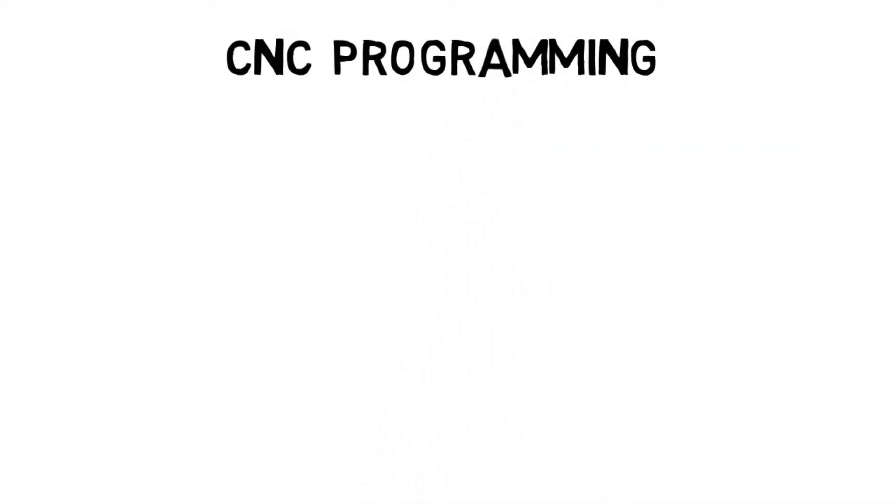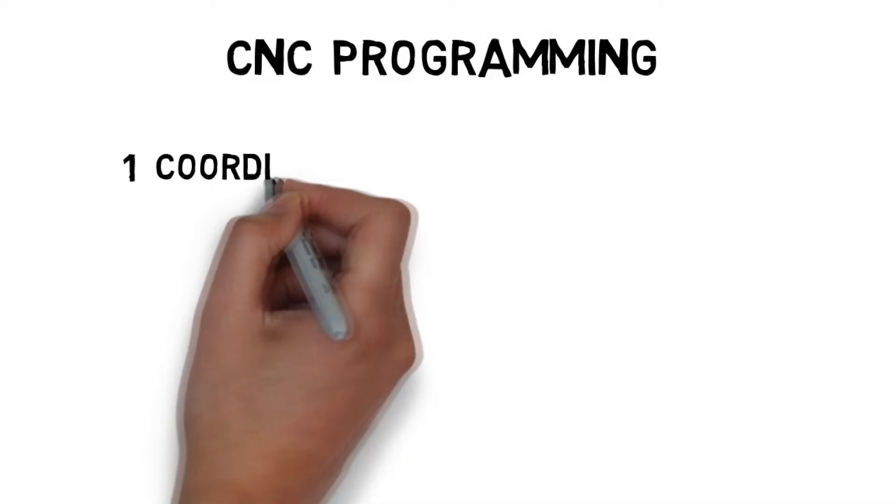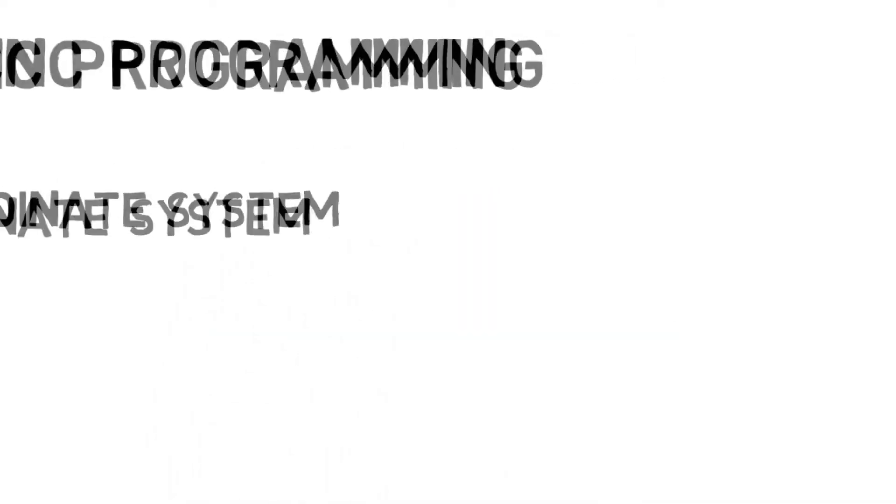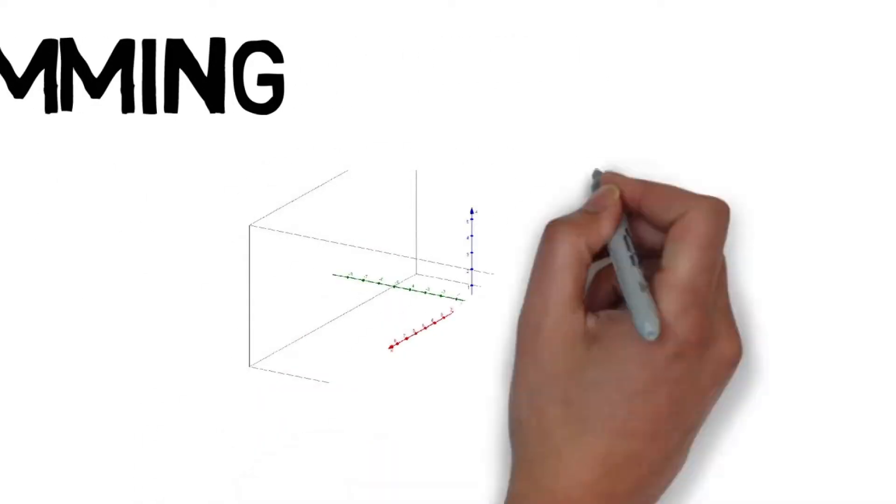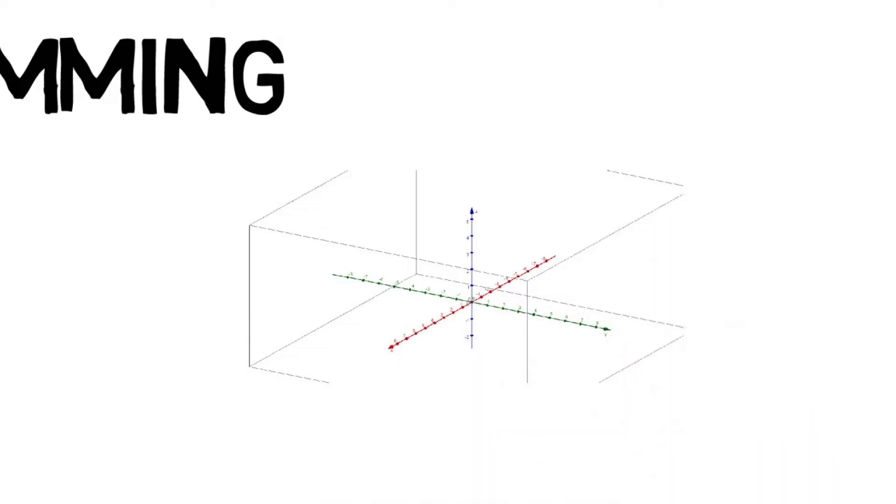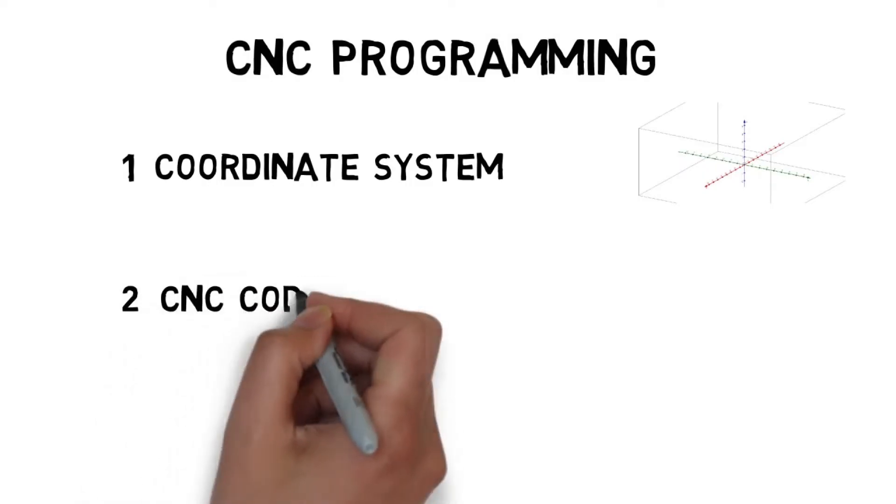To create CNC programs, you must know three things. Number 1: Coordinate system. Coordinate calculations will simplify the tool movements and the directions in X, Y and Z axis.